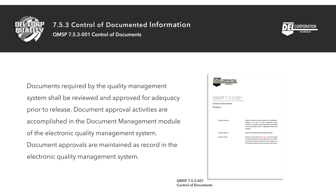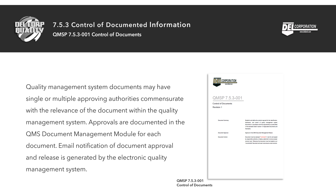Documents required by the quality management system shall be reviewed and approved for adequacy prior to release. Document approval activities are accomplished in the document management module of the electronic quality management system. Document approvals are maintained as record in the electronic QMS (QISS). QMS documents may have single or multiple approving authorities commensurate with the relevance of the document, and approvals are documented in the QMS document management module for each document.